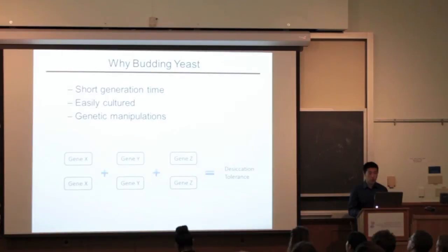Most organisms have two copies of each gene. Let's say gene X, gene Y, and gene Z are all important for desiccation tolerance. In most organisms, in order to disrupt tolerance, we need to delete both those genes.